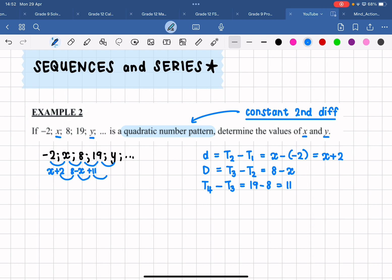I am adding 11 to eight so that I can get the next term which is 19. And then when I have to find the difference after that, if I take term five minus term four, I'm going to take y minus 19. That is going to be the next first difference.